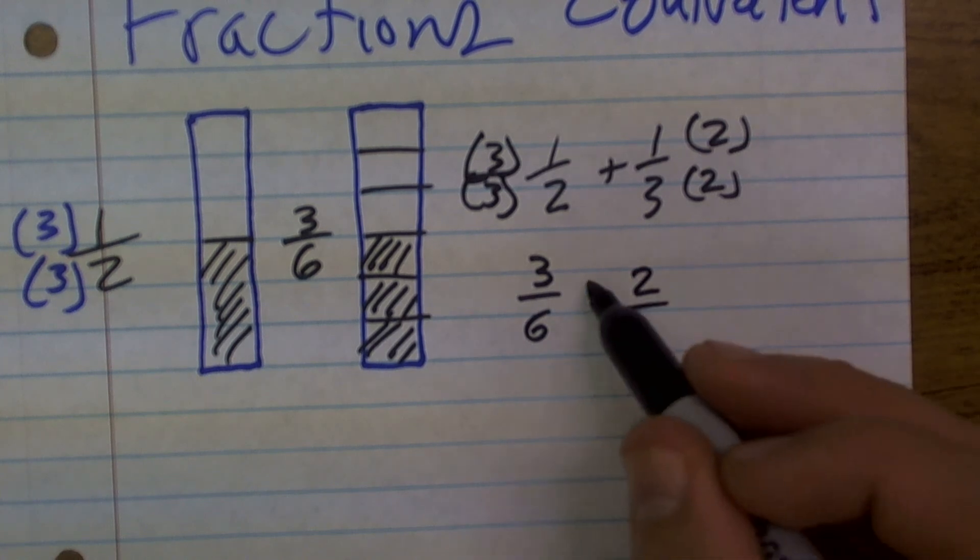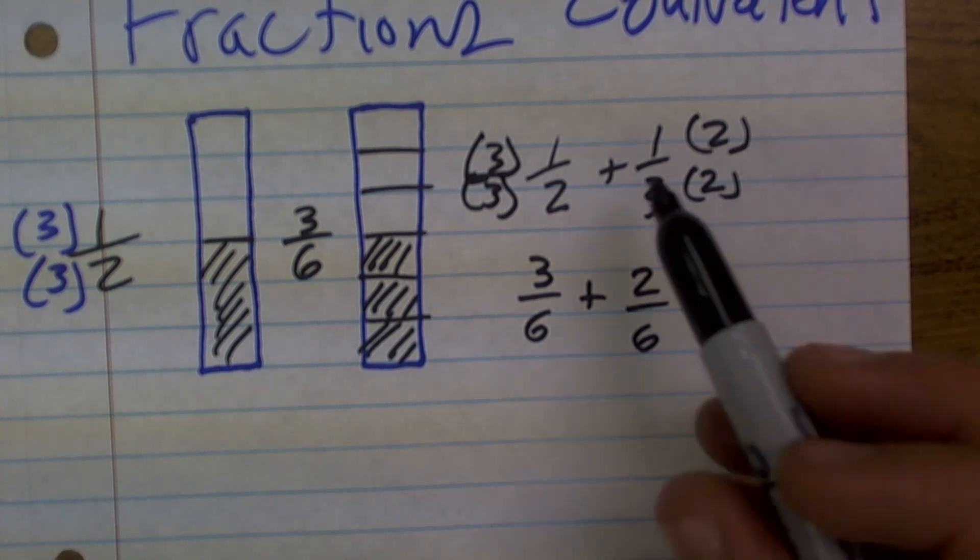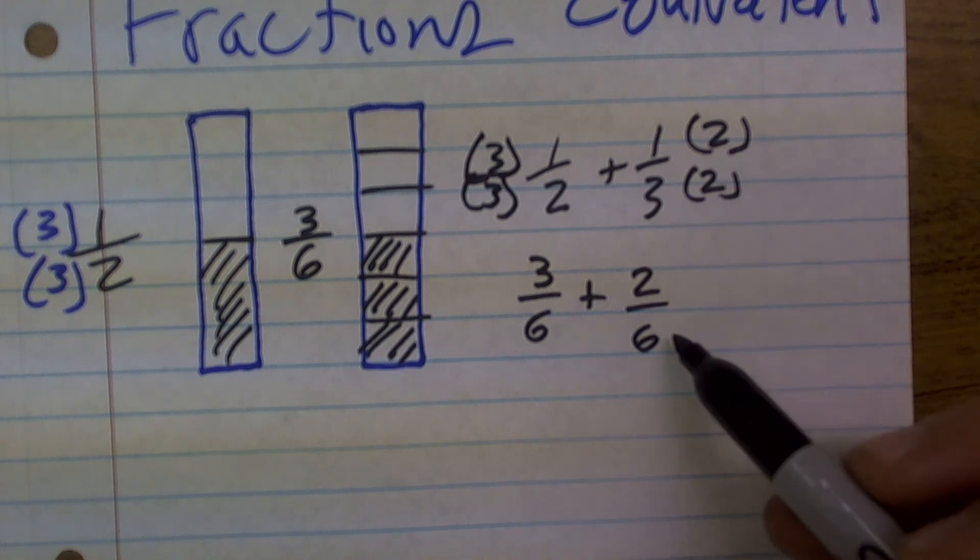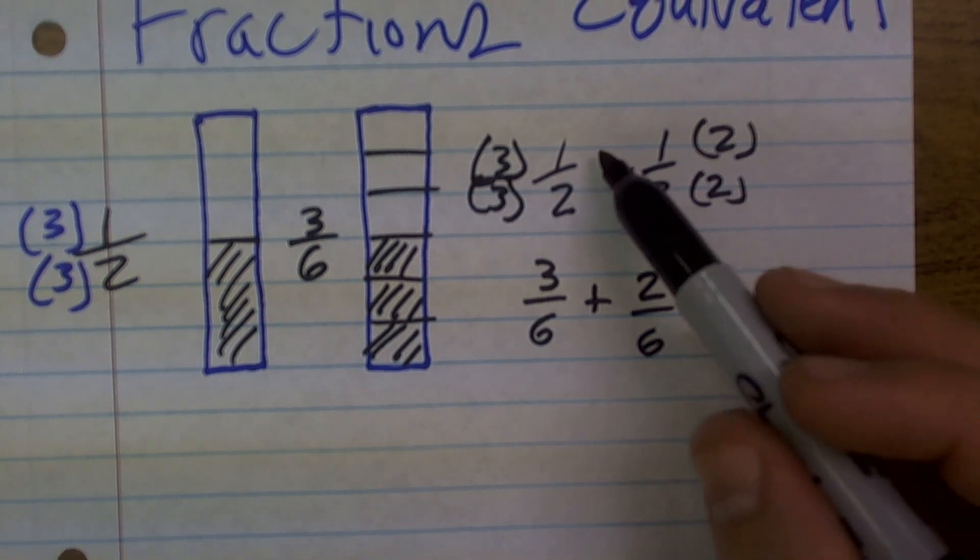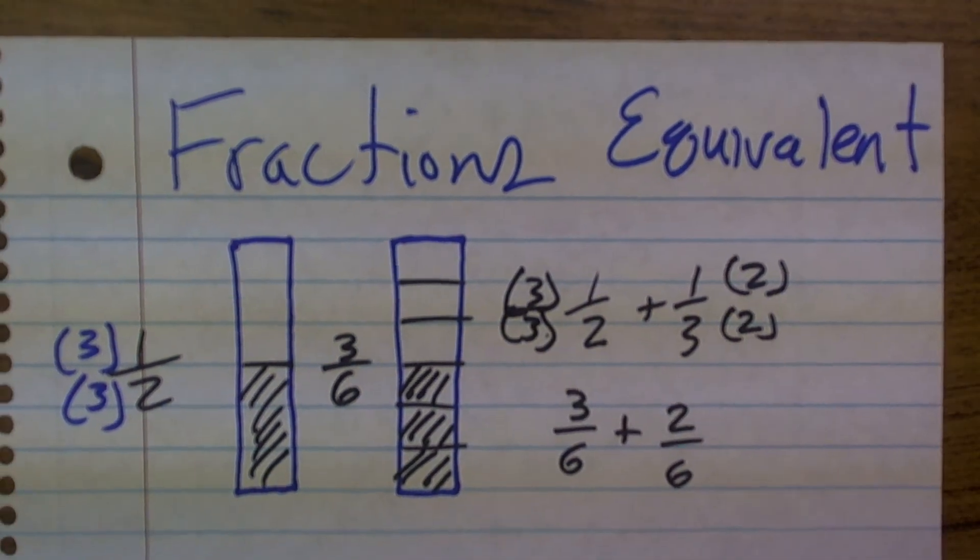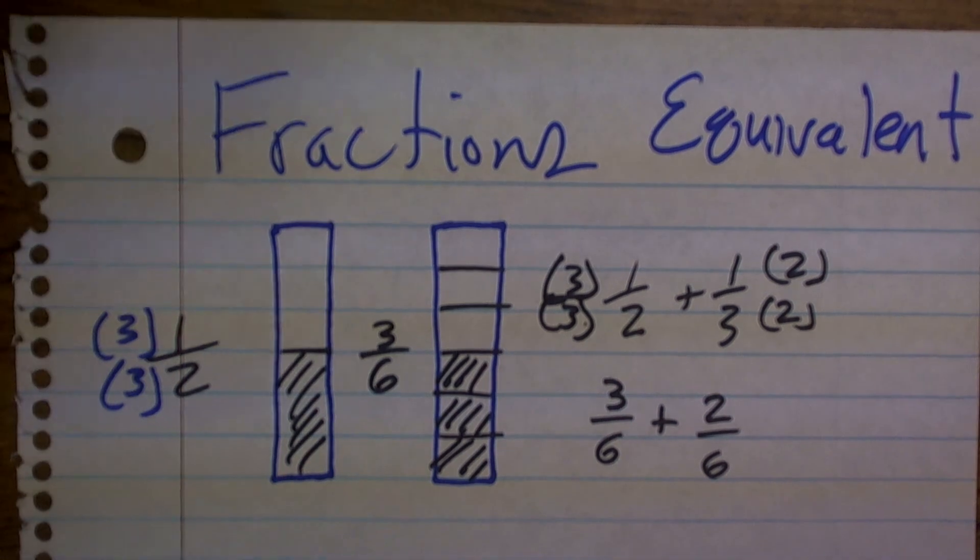And what you guys can see is, since I multiply by 2 over 2, 1/3 is the same thing as 2/6 - I'm sorry, those are equivalent - just as when I multiply by 3 over 3, 1/2 is equivalent to 3/6. So that is just a basic little rundown of equivalent fractions for you.